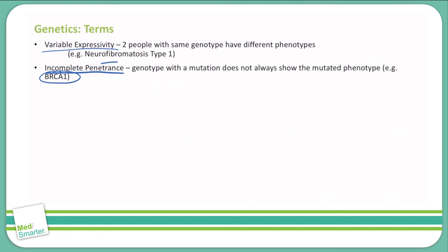Having the BRCA1 gene does give an increased propensity towards cancer. So we don't automatically jump to removing the ovaries or the breast just because they have that gene, but it gives us the ability to monitor for the potential development of cancer later down the road.